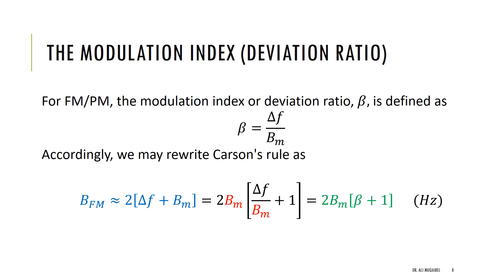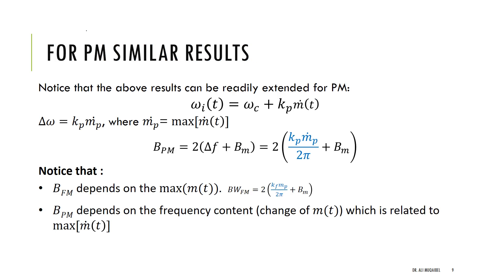Just as we defined the modulation index for AM as M_p/A, for FM and PM the modulation index is called beta, defined as Δf / B_m — the frequency deviation relative to the message bandwidth. In terms of beta, taking B_m as a common factor, the FM bandwidth becomes 2*B_m*(β + 1). As beta approaches zero we get narrowband; as beta becomes large we get wideband. Beta serves as a measure of how wideband the angle modulated signal is.